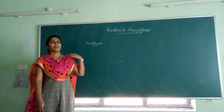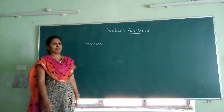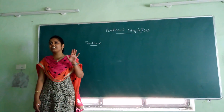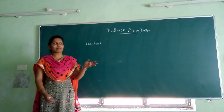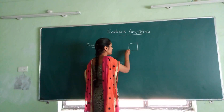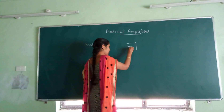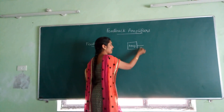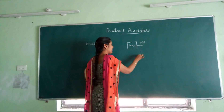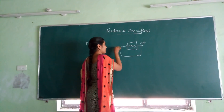Where is the output taken for this feedback amplifier? The output is taken at the amplifier output. We will be taking a simple basic amplifier, and the amplifier output is again connected to the input of the amplifier.